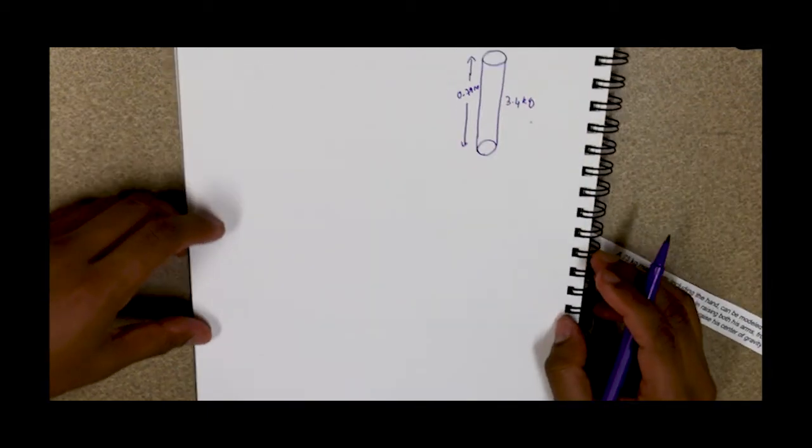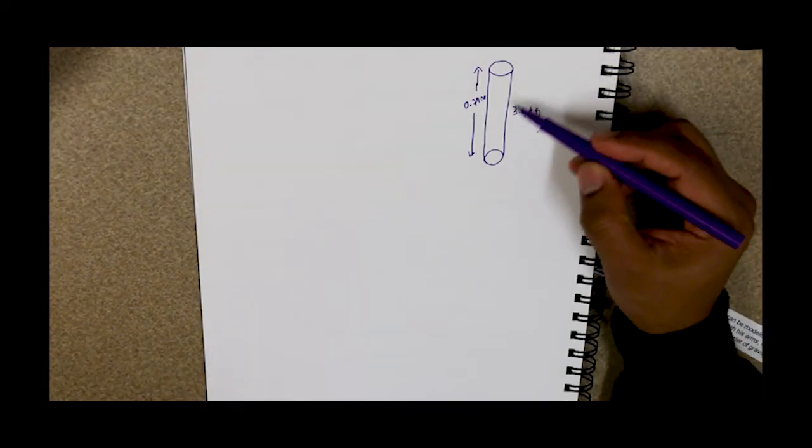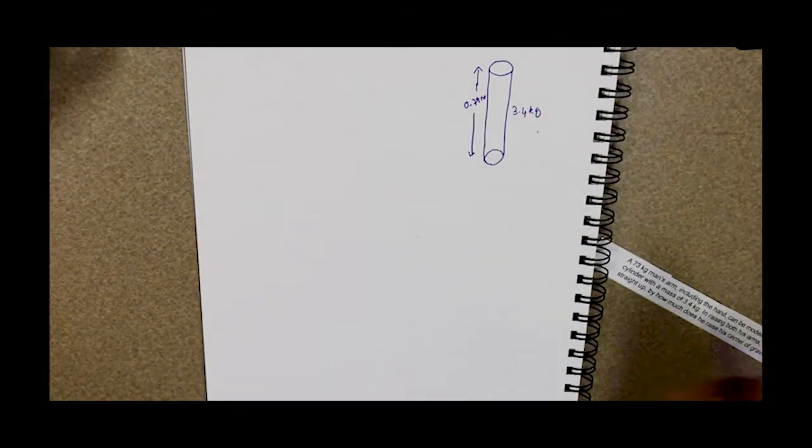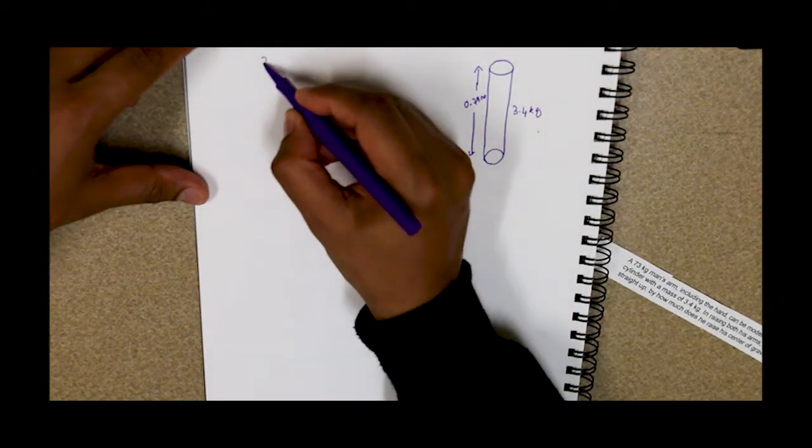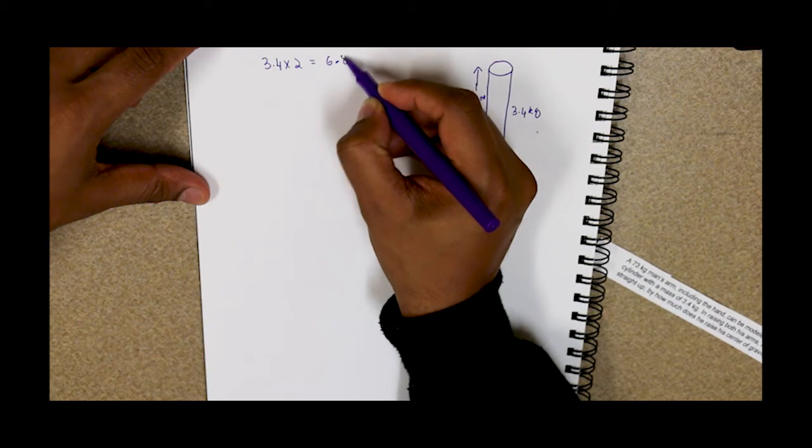First let's calculate the mass because he has two arms. We'll multiply 3.4 into 2, which gives us 6.8 kilograms.